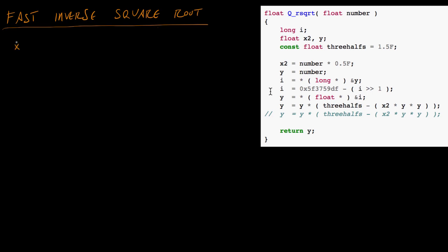So why do you want a fast inverse square root? Let's say you want to normalize a vector x — we do that by taking the vector x and dividing it by its length. But floating point division is slow, and finding the square root to get this length is slow. So if we can do x dot x and raise it to the negative one-half power — which is an inverse square root — that's the same as dividing by the square root. Then if we have a really fast function for doing this inverse square root, we can find the normal length vector very quickly.